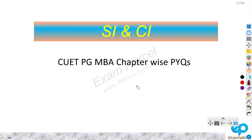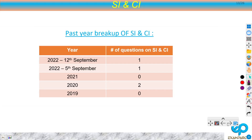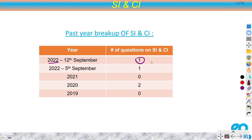Hey everyone, in this video we will discuss all the past year questions from the Simple Interest and Compound Interest chapter, which are coming from past year CAT PG MBA papers. Let's first discuss the past year breakup of SI and CI. In 2022 we had one question in each paper, in 2021 we had no question, in 2020 we had two, and in 2019 no questions — so total there were four questions.